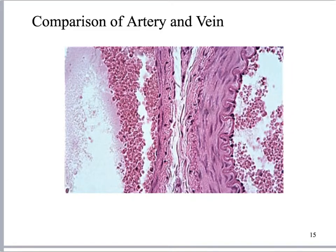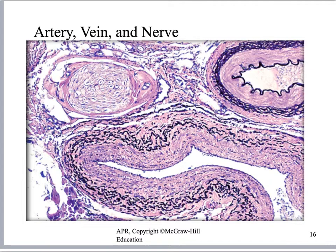I'm going to count to five — while I do, tell yourself which side is artery and which side is vein. This is the artery, this is the vein. How do you know? A little bit from the lumen, the ribbon shape of the tunica interna, and that thick tunica media — those are your key indicators. Now I want you to find the artery again. Here's your artery, here is your nerve, and here is your vein.